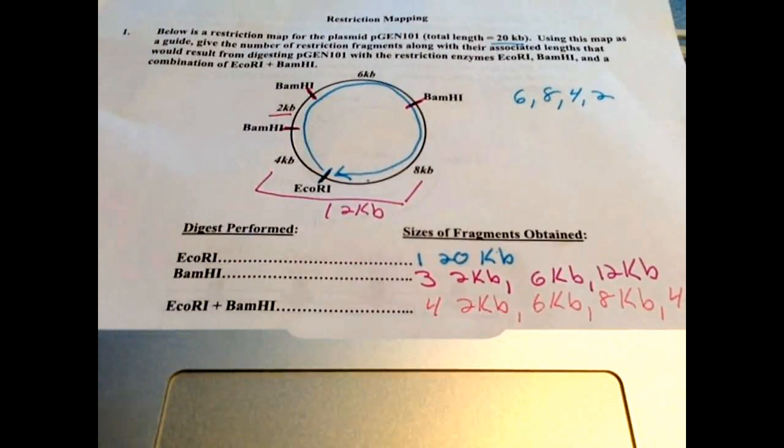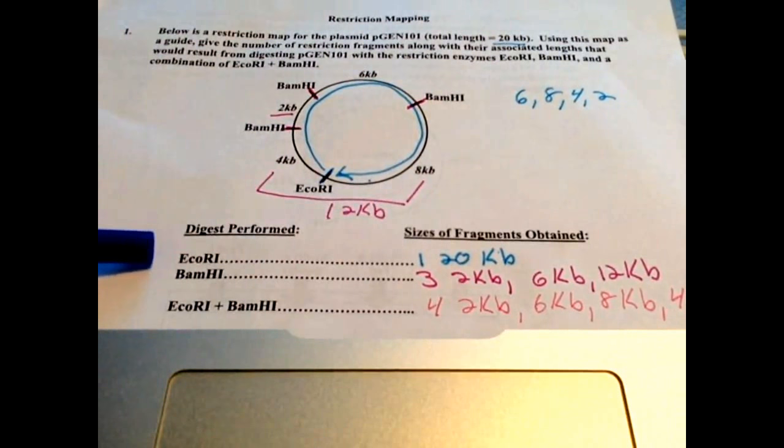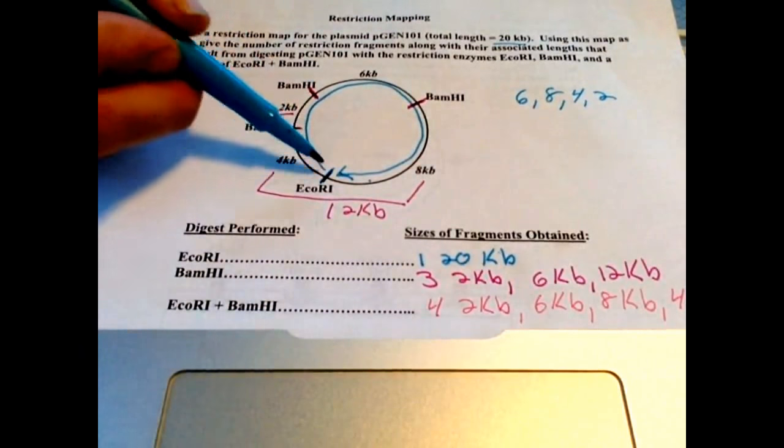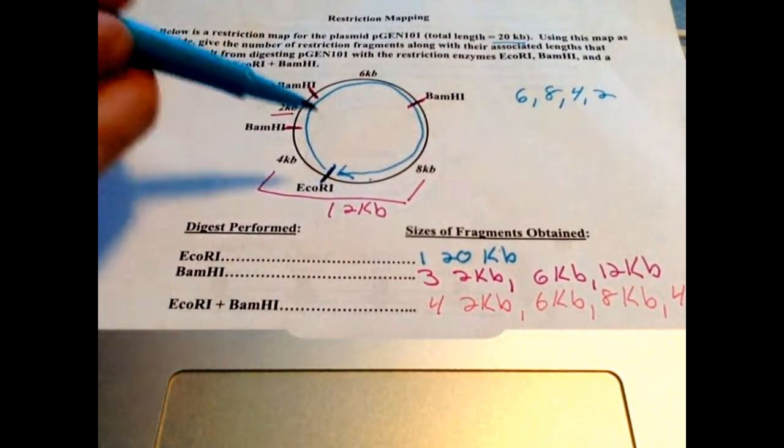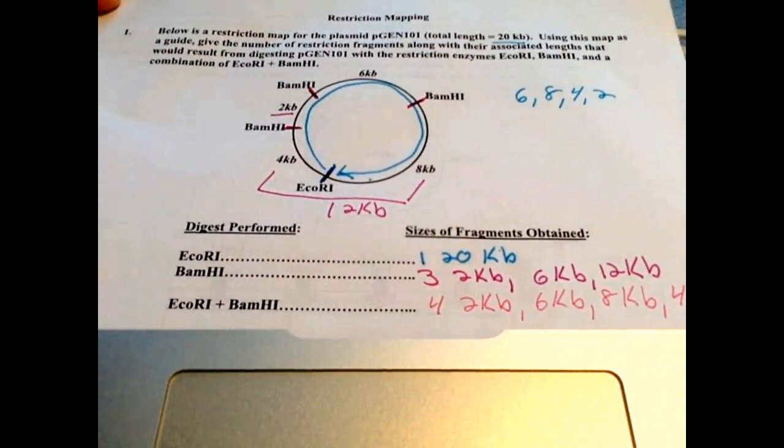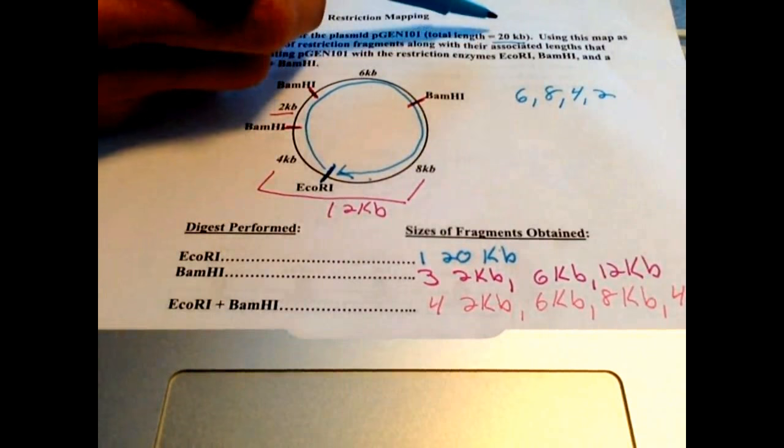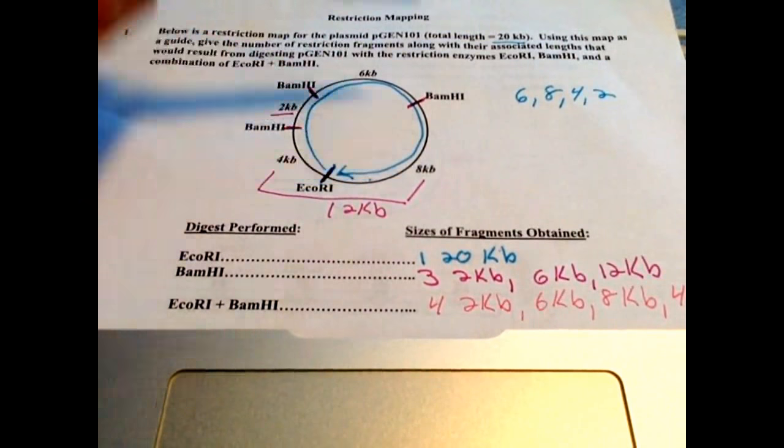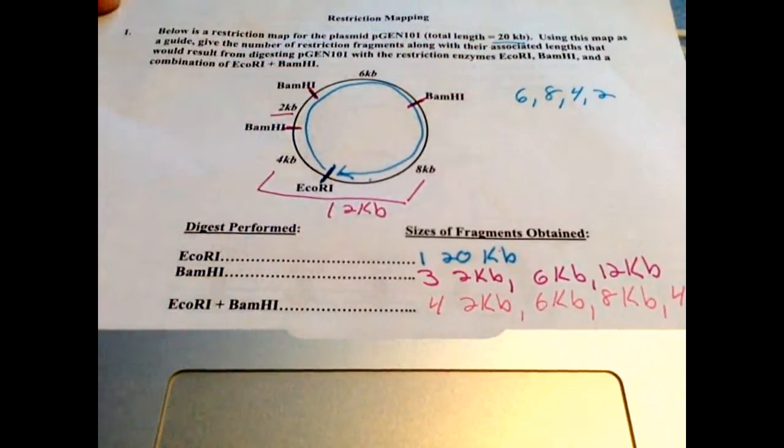So first, an engineer would do a single digest, using only one enzyme all by itself. So looking at this ECOR1, if this were the only cut made, this fragment would be the entire length of the plasmid, which we were told in the question was 20 kilobases. We could have also added up the segments on the map: 6, 8, 4, 2, that would be 20.